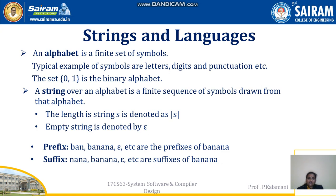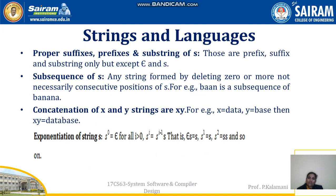A string is defined as a finite sequence of elements drawn from the alphabet. For example, '010' is a string in the binary alphabet. If the string is named S, the length of the string is denoted by |S|. The empty string is denoted by epsilon. Proper suffixes, prefixes, and substrings of S exclude epsilon and the string itself.